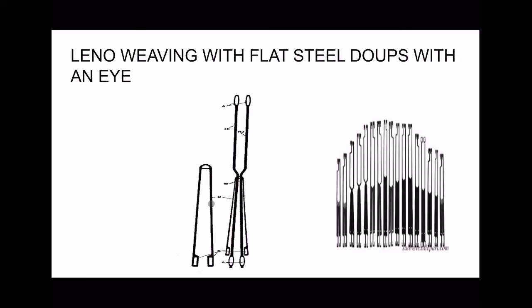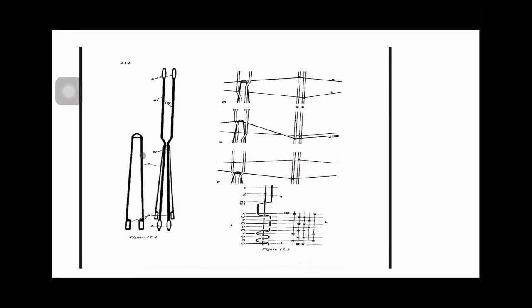One leg of the dupe is placed in one slot of heel H1, and the other leg is placed in the other slot of heel H2. There is an eye in the top portion of this dupe. Because of this eye, this method is somewhat limited in terms of figuring capacity, so it is mainly used for industrial fabric production or plain fabrics, though it can be combined with any other weave to generate special effects.